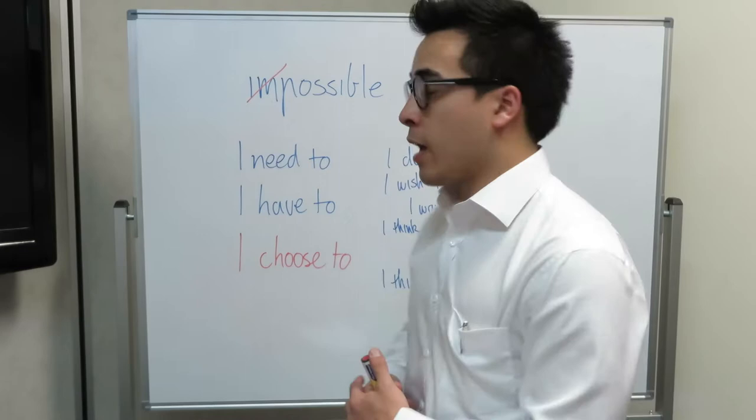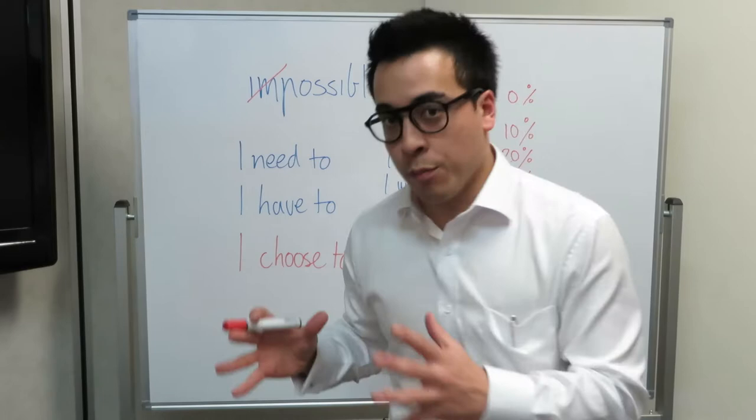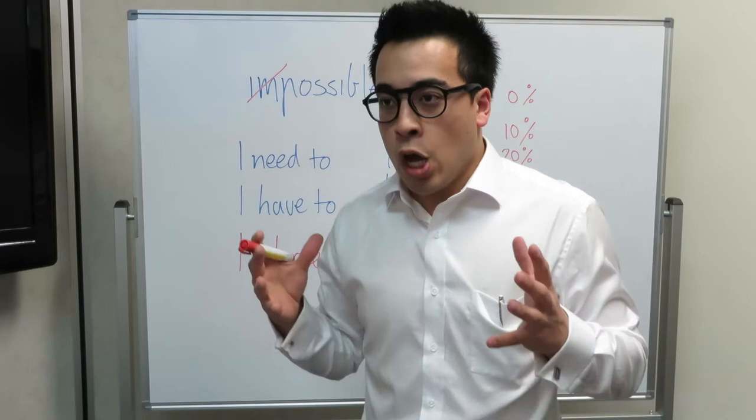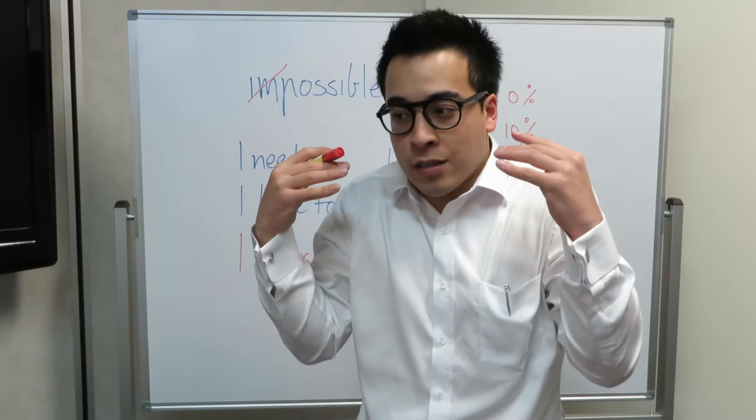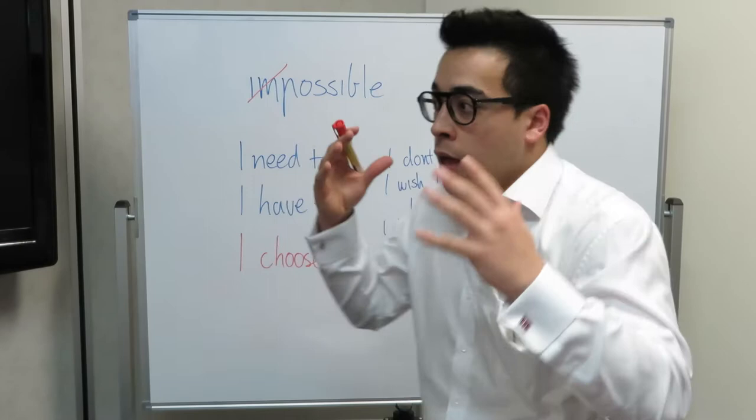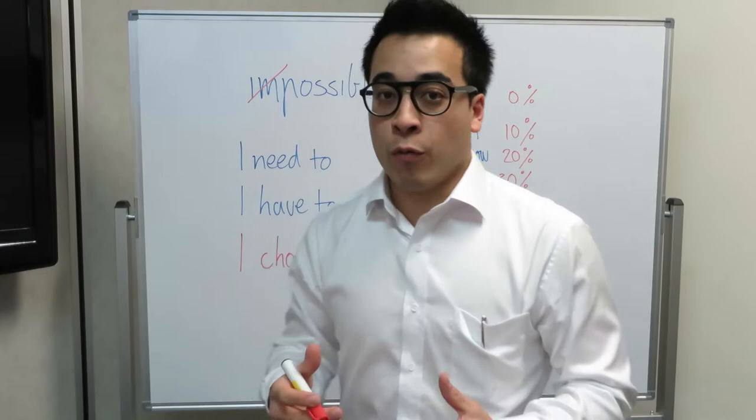Firstly is the word impossible. When you have the word impossible, when you say something's impossible, your brain, your eyes, your body will look for reasons to - it's a mental program and your brain and eyes will look for reasons to agree with your statement or with what's going on in your mind. And so automatically when you say something's impossible, you can't do it.